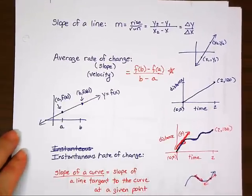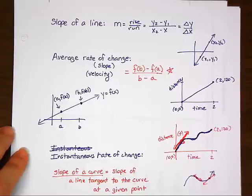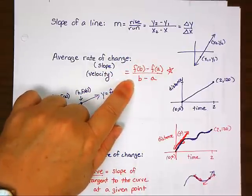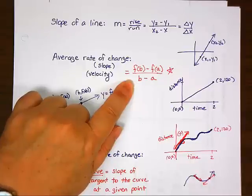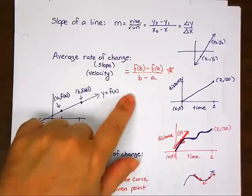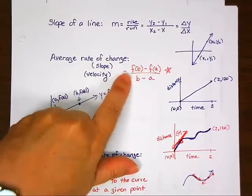The word 'difference' in math means subtraction, and 'quotient' means division. Look at the formula F of B minus F of A over B minus A — it's full of dividing and subtracting. This is the difference quotient foundational formula. You are taking the quotient of two things that are subtracted — that's why it's called a difference quotient.